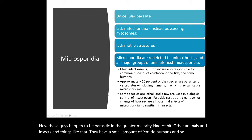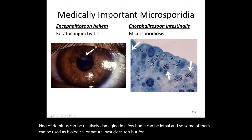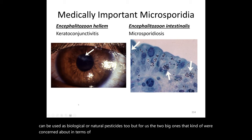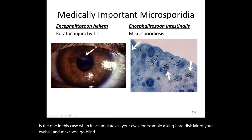A small percentage of Microsporidia can infect humans and animals, and some can be lethal. Some are also used as biological or natural pesticides. The two major species of concern for humans: one accumulates in the eyes, hardening the sclera and causing blindness — a condition known as keratoconjunctivitis. This is caused by Encephalitozoon hellem.